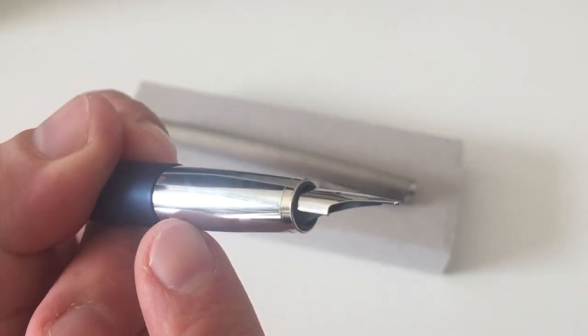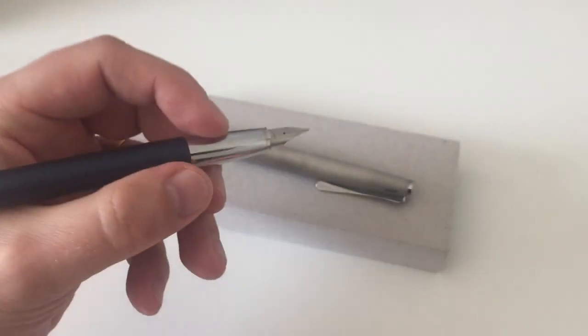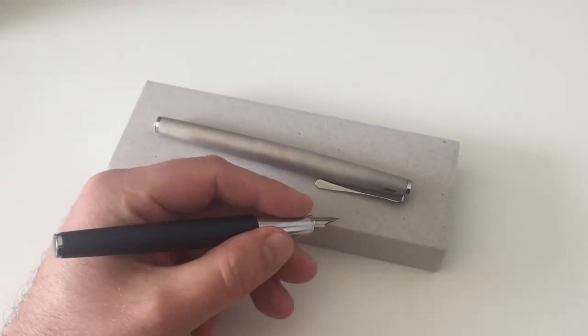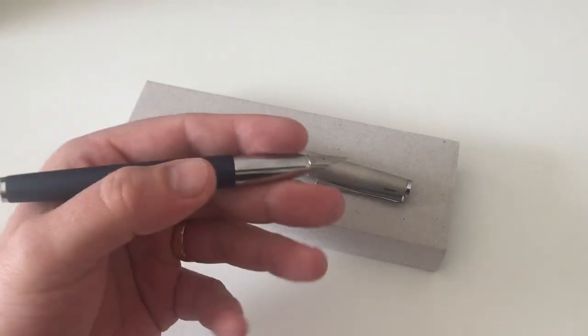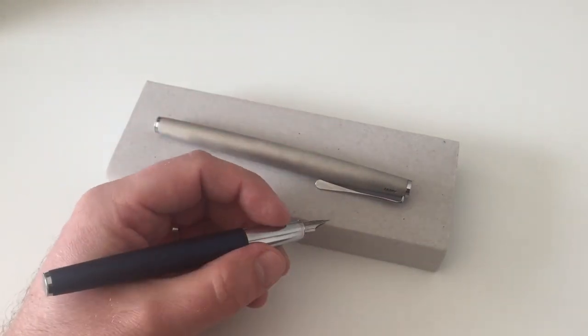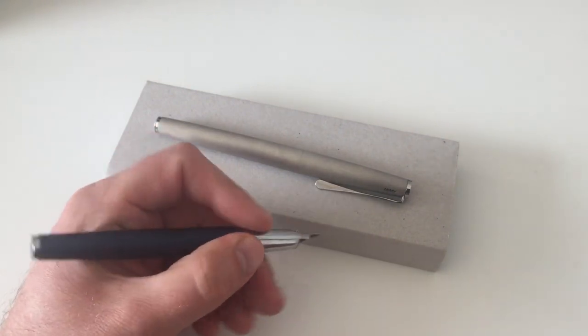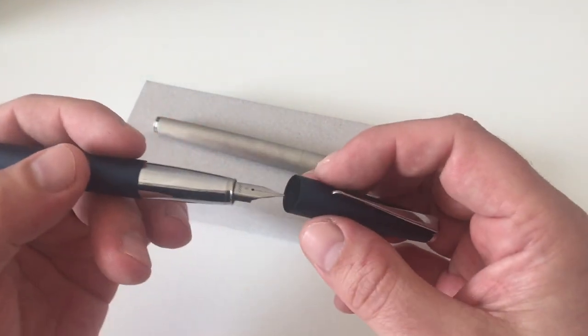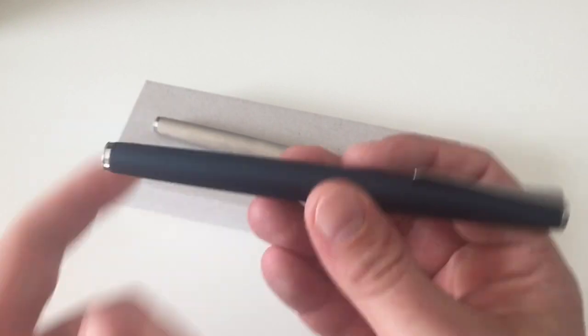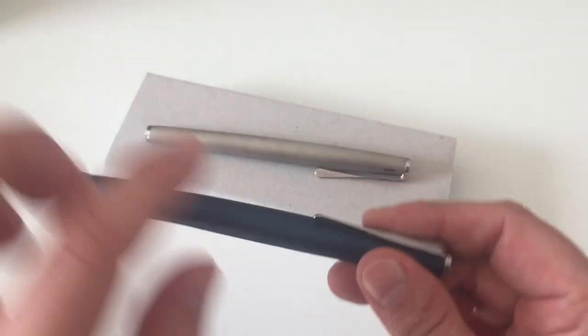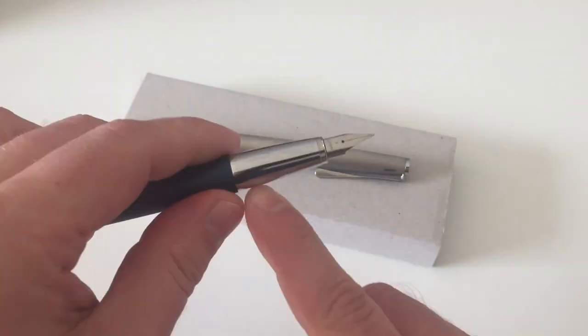Now the Imperial Blue Lamy Studio is a really beautiful pen, but it has one problem that many people complain about, and this is the highly polished chrome section. When you write with that pen for quite a while or you get slightly sweaty hands, that chrome section actually does get slippery.